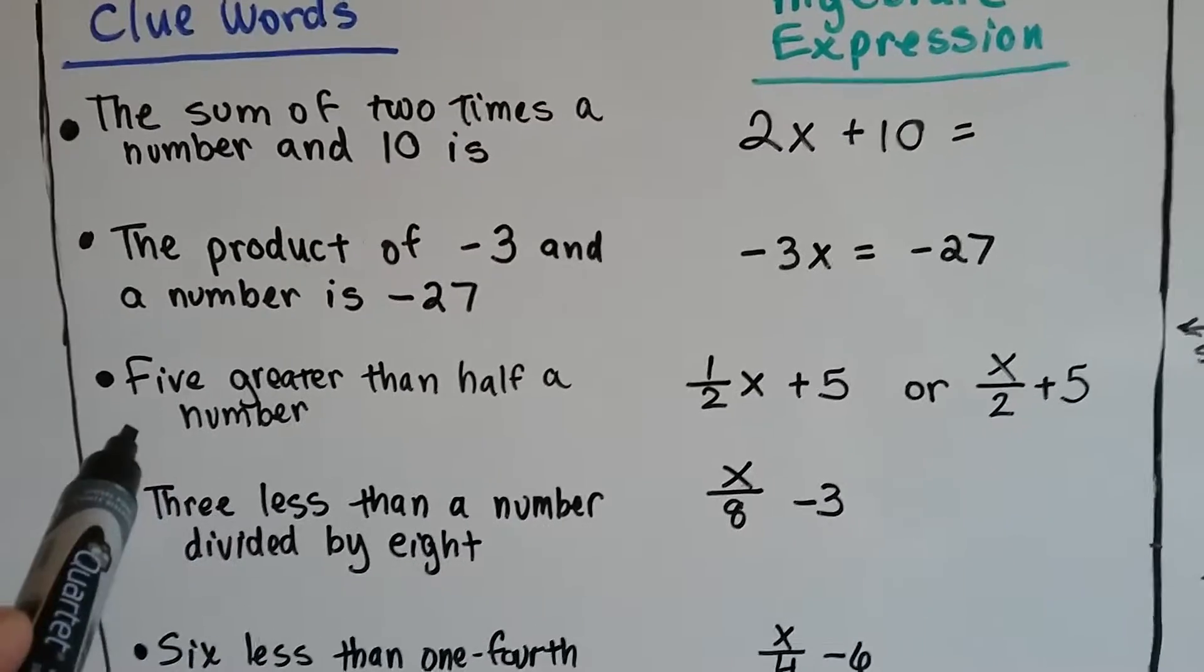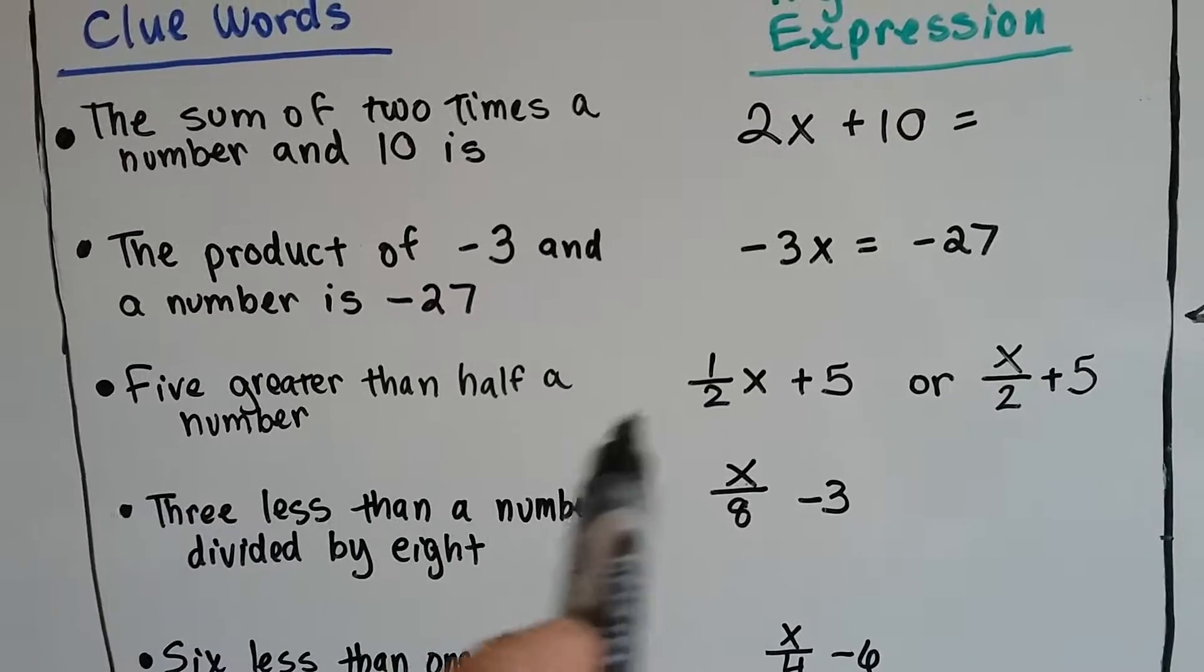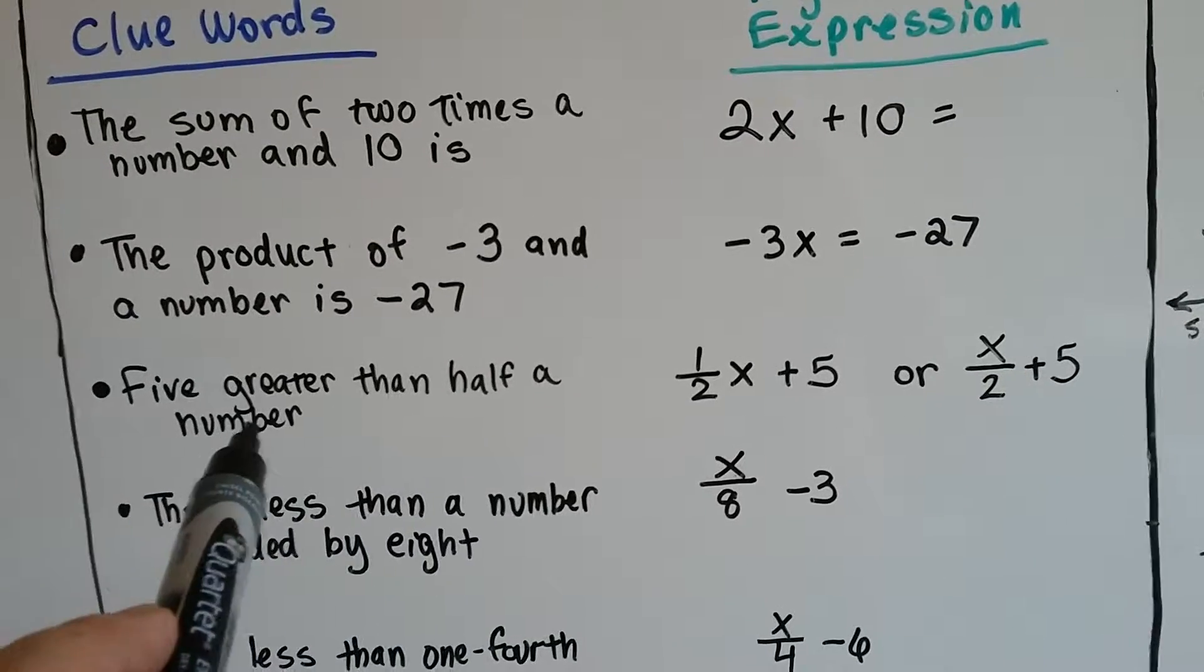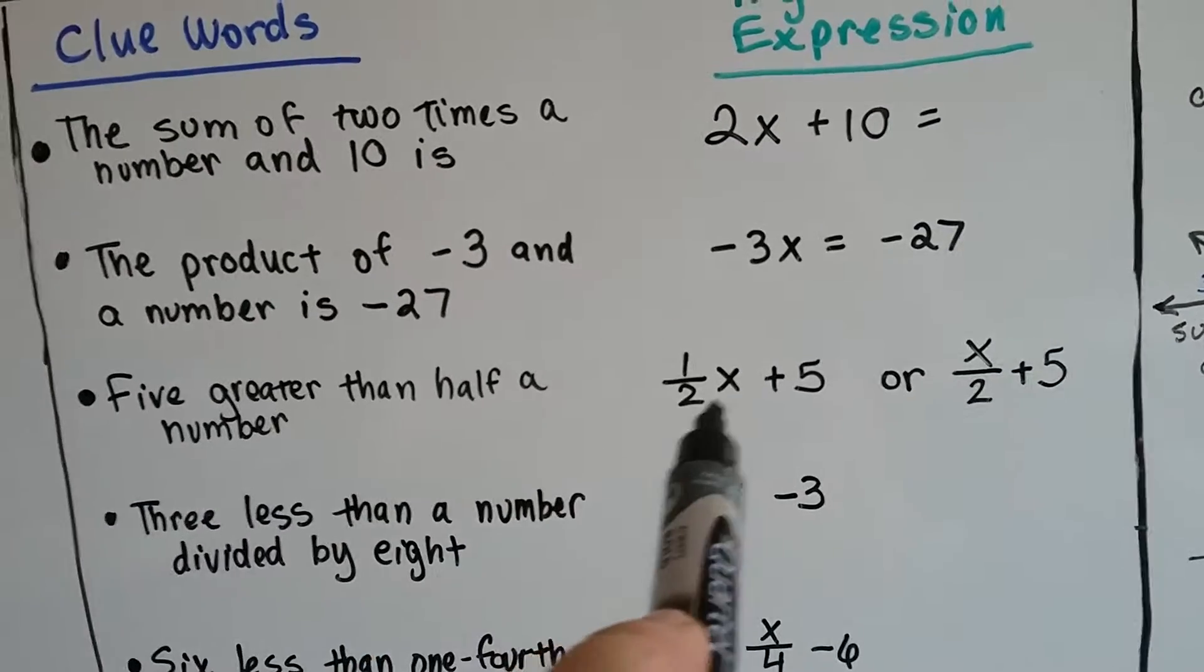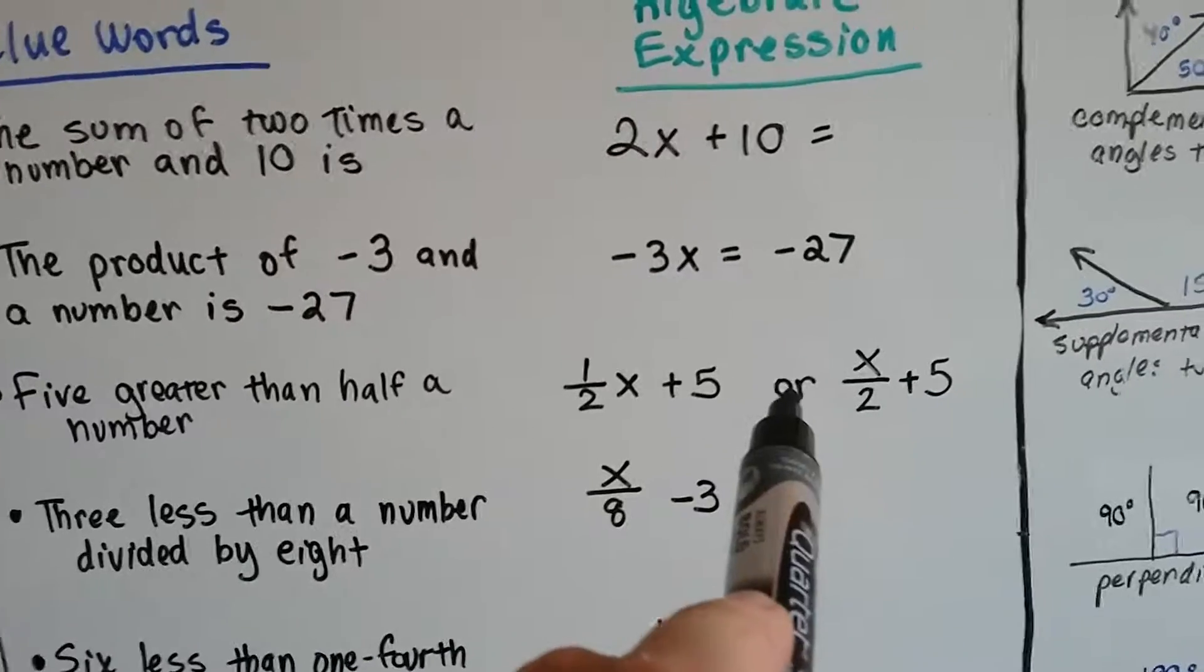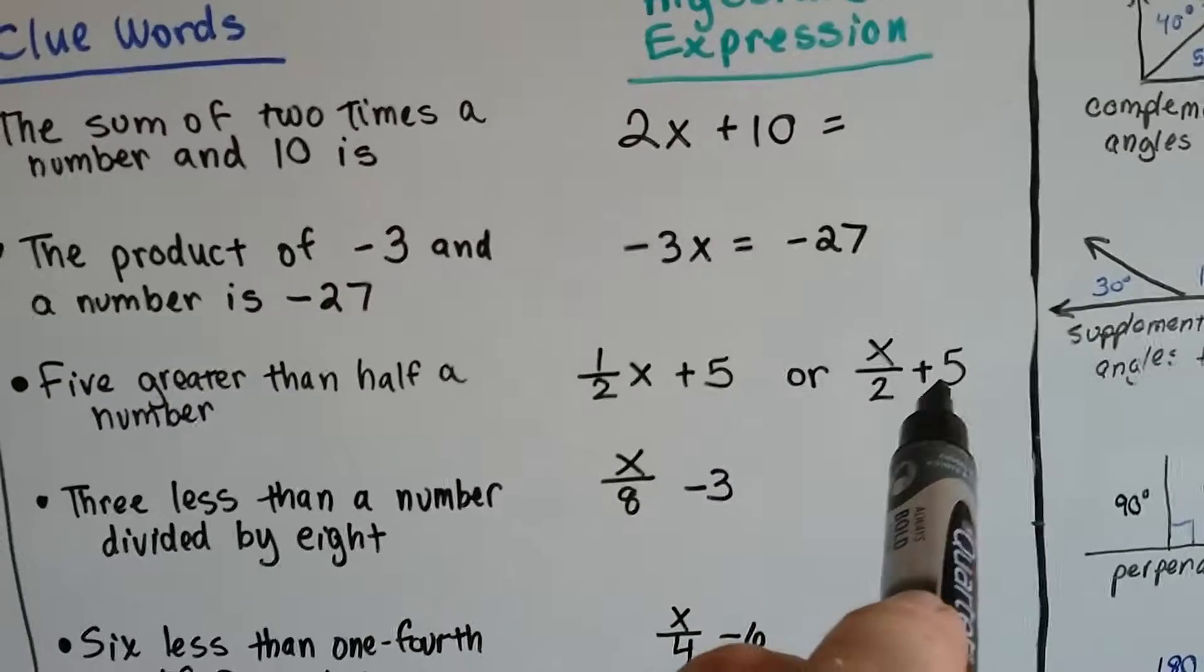If it says 5 greater than half a number, it's going to be plus 5 and half of x. So we can say x times a half, or half times x plus 5. Or we could even say x divided by 2 plus 5, because that would still get us half of x.